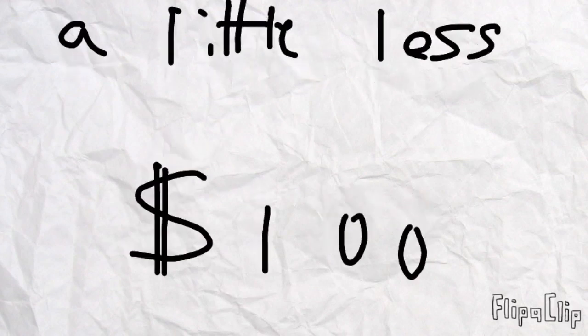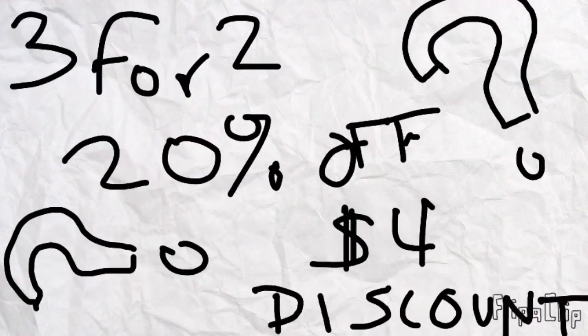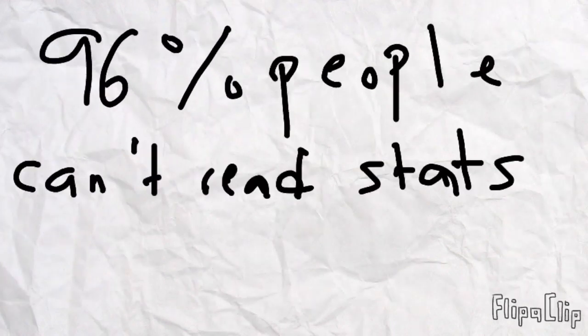They should be able to compare discounts on the fly, manage their bank accounts, do their taxes. Also, did you know that 96% of people can't read statistics critically?